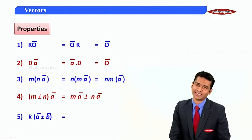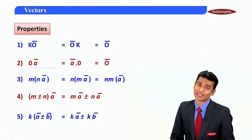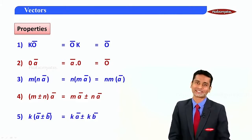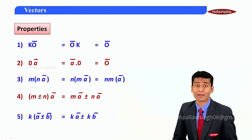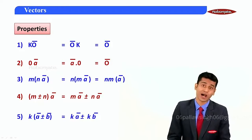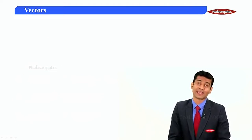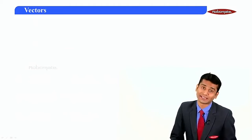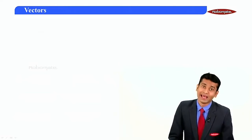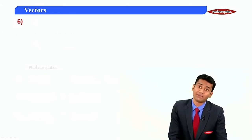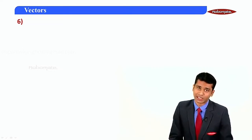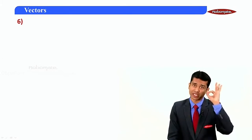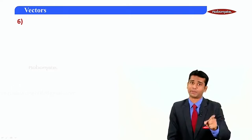The next property states that k into (a-bar plus b-bar) is equal to k·a-bar plus k·b-bar, or k into (a-bar minus b-bar) is equal to k·a-bar minus k·b-bar.